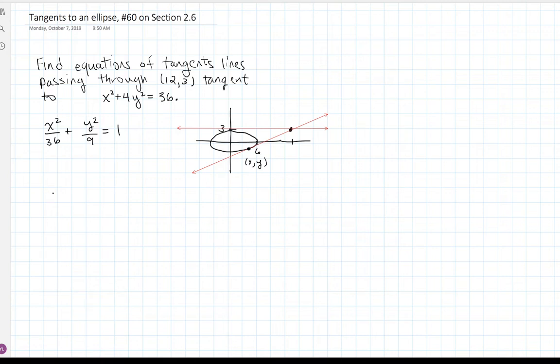So the first observation is, at the point of tangency, the derivative of y with respect to x on the curve, on the ellipse, since the derivative gives the slope of the tangent line to the curve, that should be equal to the slope of that tangent line, which should coincide with the result of computing the rise over run in between this point 12, 3, and the point, the mystery point x, y. So this should equal the slope between x, y and 12, 3. So that's observation number 1.